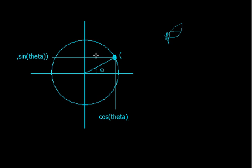This is the unit circle that you always hear about, and that's because the radius of it is one. And all that really means is that the distance from any point to the center is going to be one.